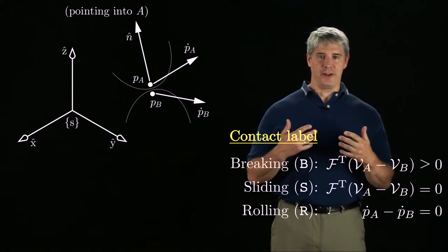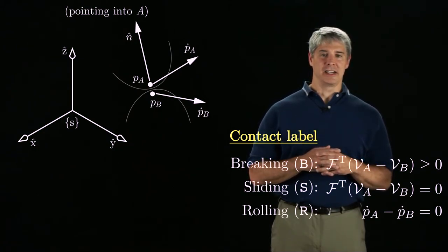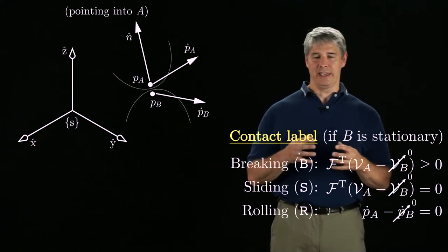Often, we consider the feasible motions of just one body, such as body A, and assume that the other body is stationary. In this case, we simply set VB equal to zero.